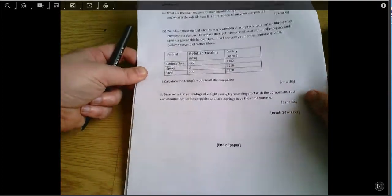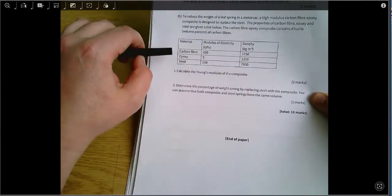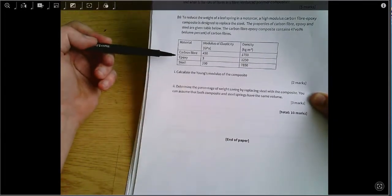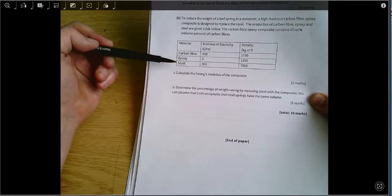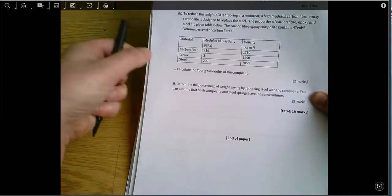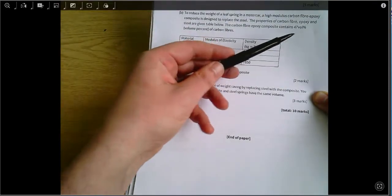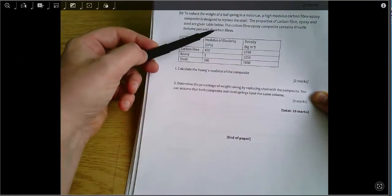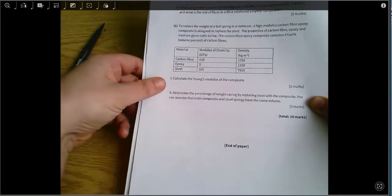So in Part B, which is really what I'm going to focus on here, we've got this table of information about the fiber and the epoxy. Those two things together will make up the composite, and then we're comparing it all to steel which is here. We're asked first of all to calculate the Young's modulus of the composite which is 47 volume percent carbon fiber, and then we're asked something about weight saving. This is one of those questions where it's good to know your data sheet, which is just across the page.